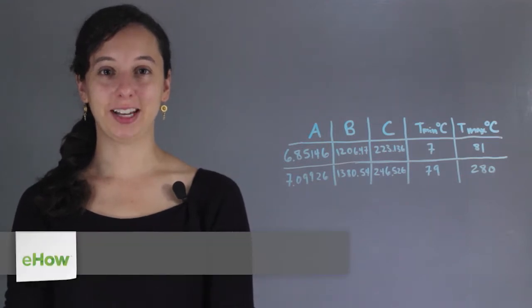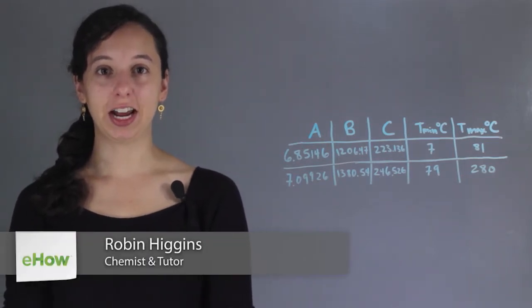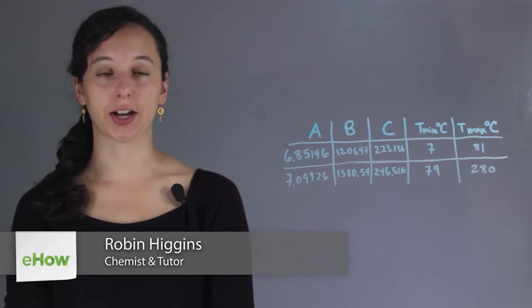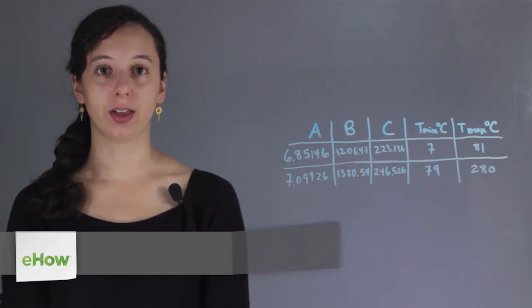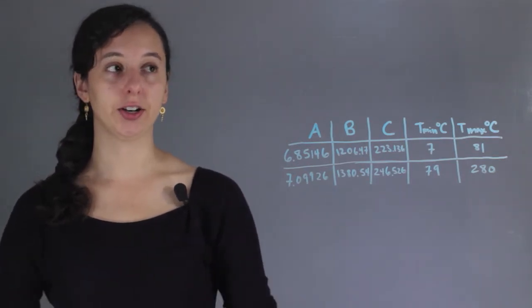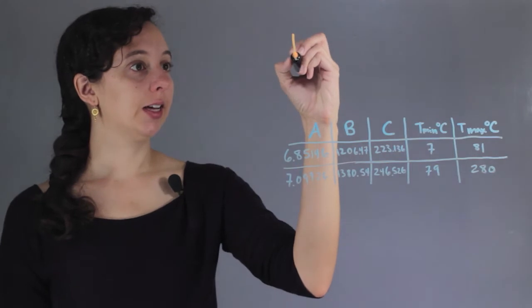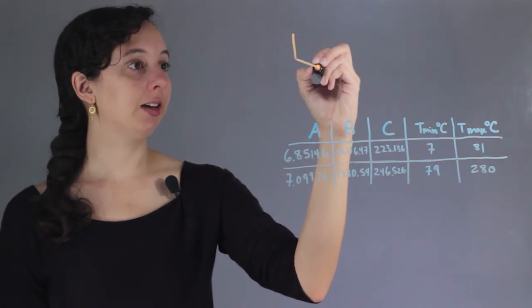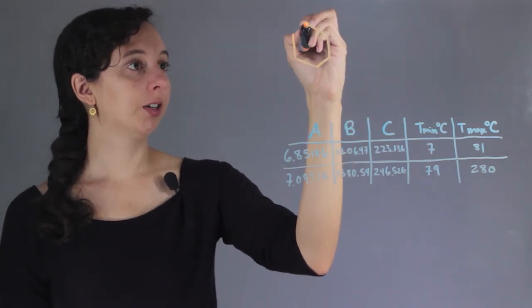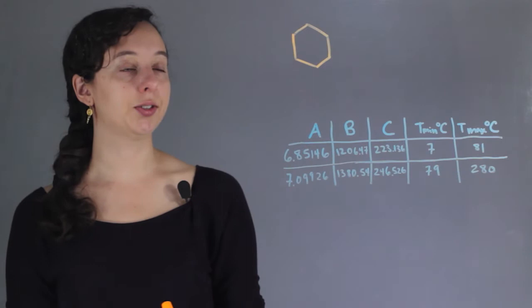Hi, I'm Robin Higgins, and this is the Antoine equation coefficients for cyclohexane. So just a reminder, cyclohexane is hexane but circular, so it forms a hexagon like this.